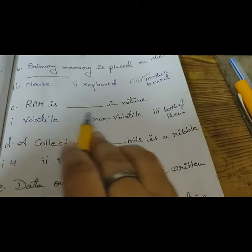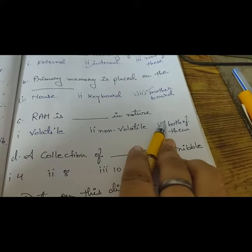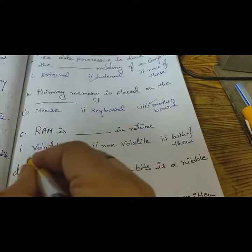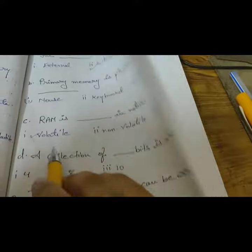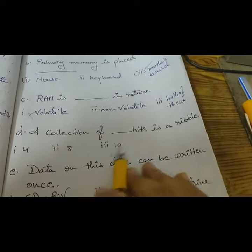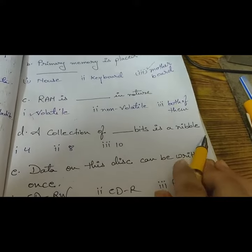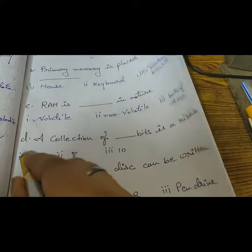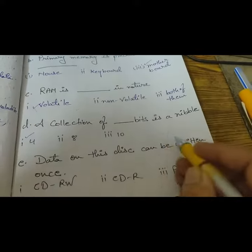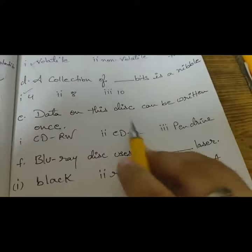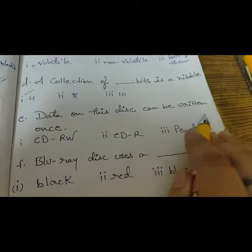RAM is volatile in nature. A collection of four bits is a nibble. Data on this disk can be written once.